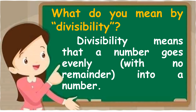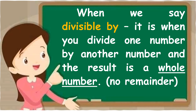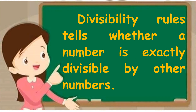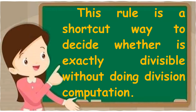So, what do you mean by divisibility? Divisibility means that a number goes evenly into a number. When we say divisible by, it is when you divide one number by another number and the result is a whole number — walang remainder. Take note: walang remainder. Divisibility rules tell whether a number is exactly divisible by another number. This rule is a shortcut way to decide whether it is exactly divisible without doing division computation — a shortcut ang divisibility rule.